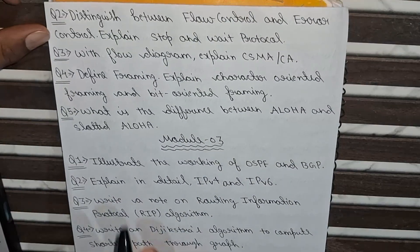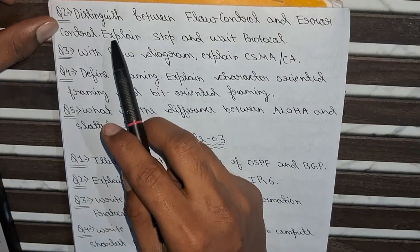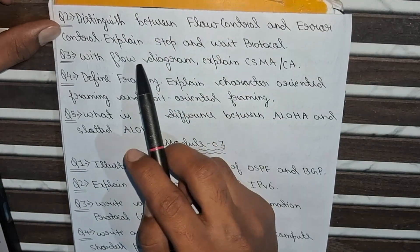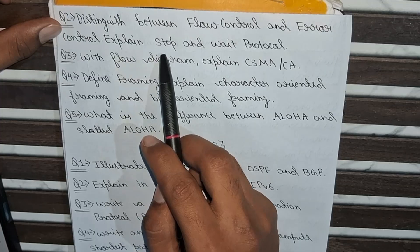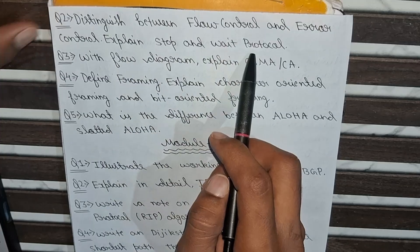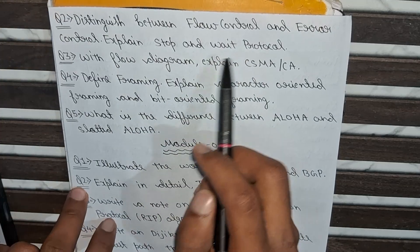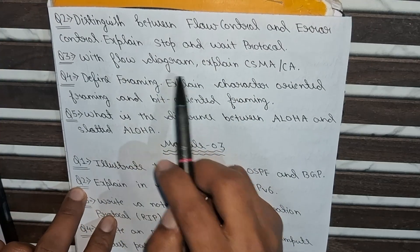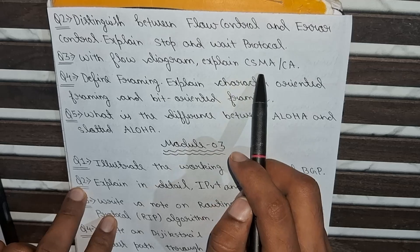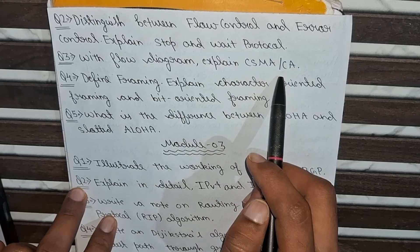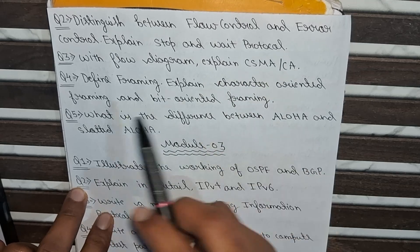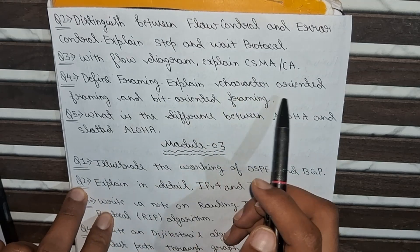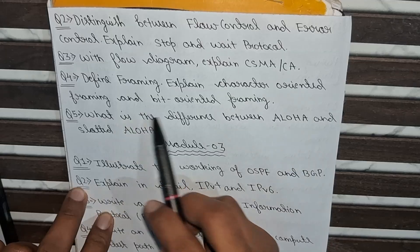The second question is: Distinguish between flow control and error control. Explain the stop-and-wait protocol. The third question is: With a flow diagram, explain CSMA/CA. The fourth question is: Define framing. Explain character-oriented framing and bit-oriented framing.